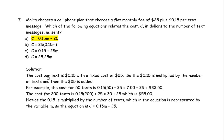The cost per text is $0.15, which is the variable cost. The fixed cost is $25 - she pays $25 once a month, but $0.15 for every single text message sent. To calculate the cost for a certain number of text messages, the $0.15 is multiplied by the number of text messages, and then you add the $25.